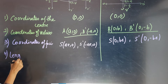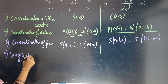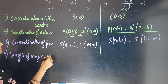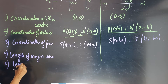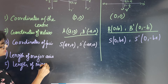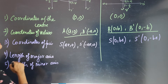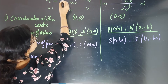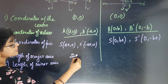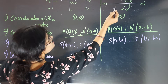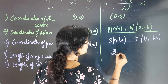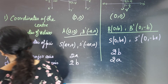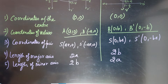Fourth: length of major axis and length of minor axis. For the ellipse with major axis on the x-axis, major axis = 2a and minor axis = 2b. For the ellipse with major axis on the y-axis, it is opposite: major axis = 2b and minor axis = 2a.